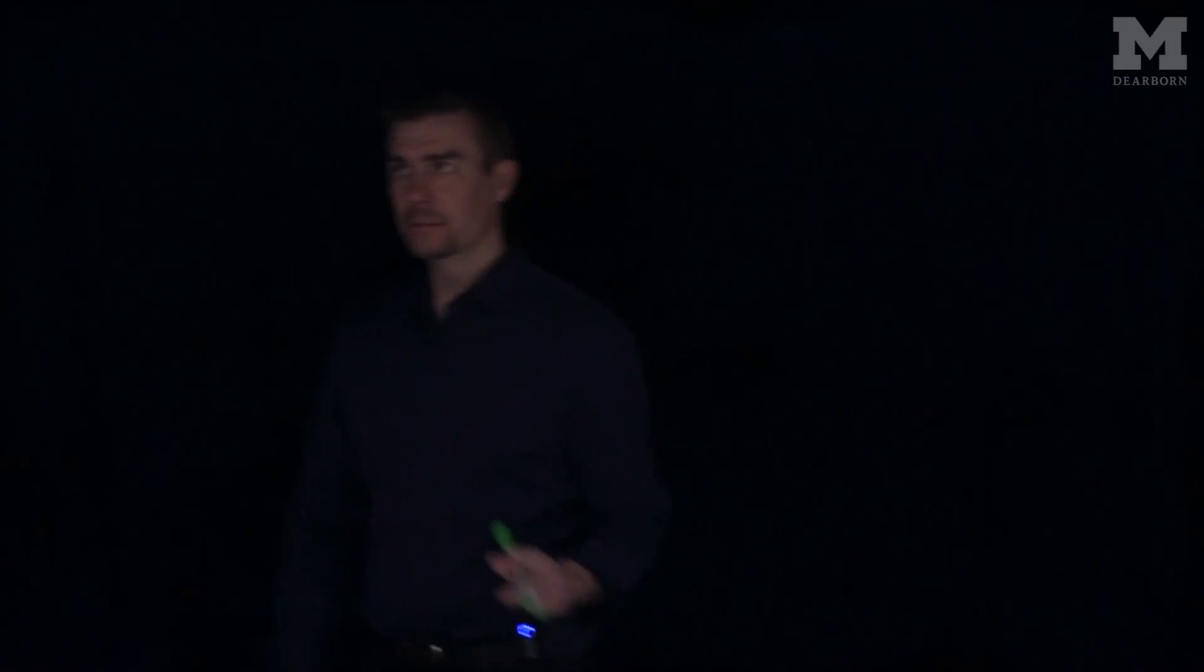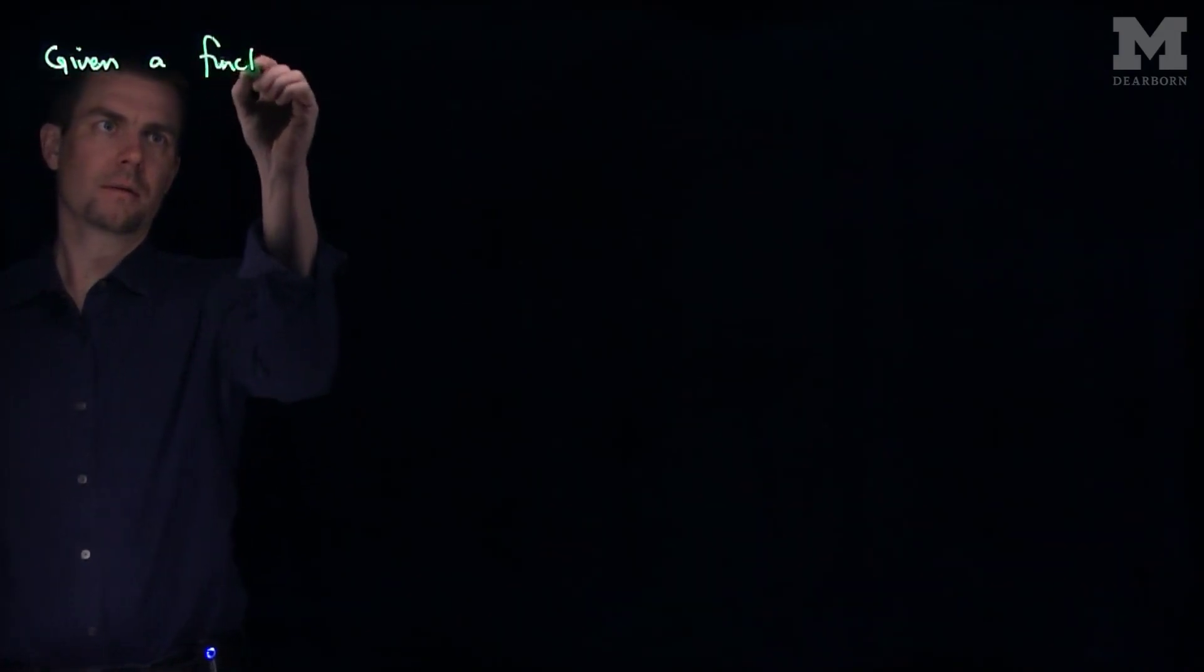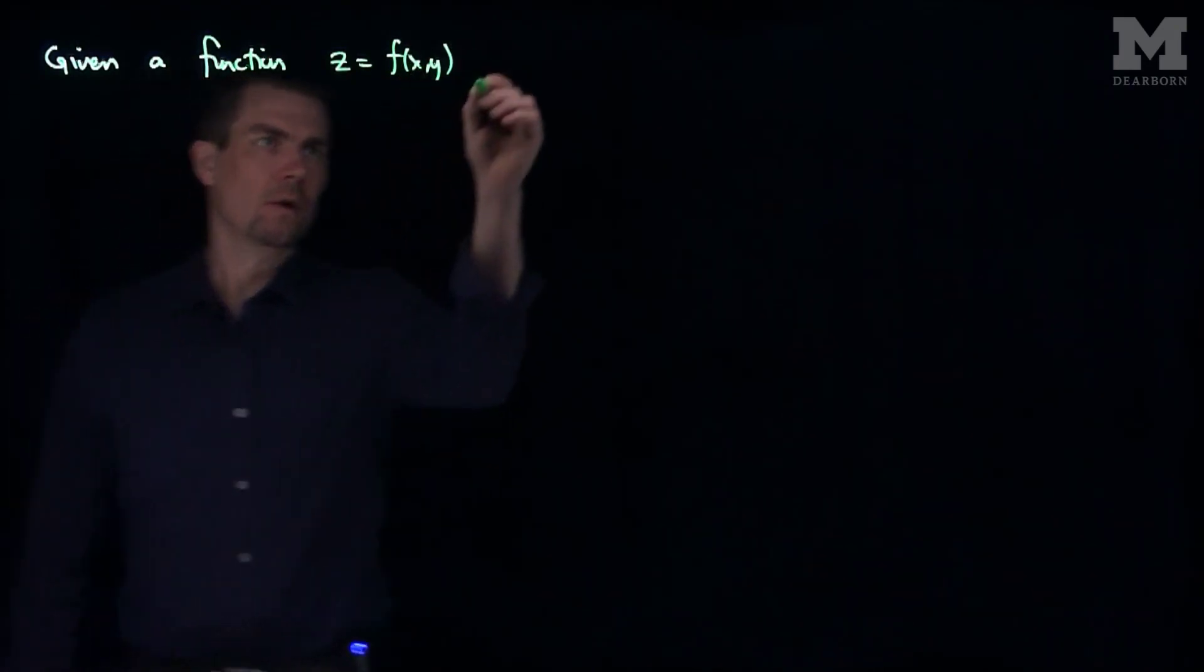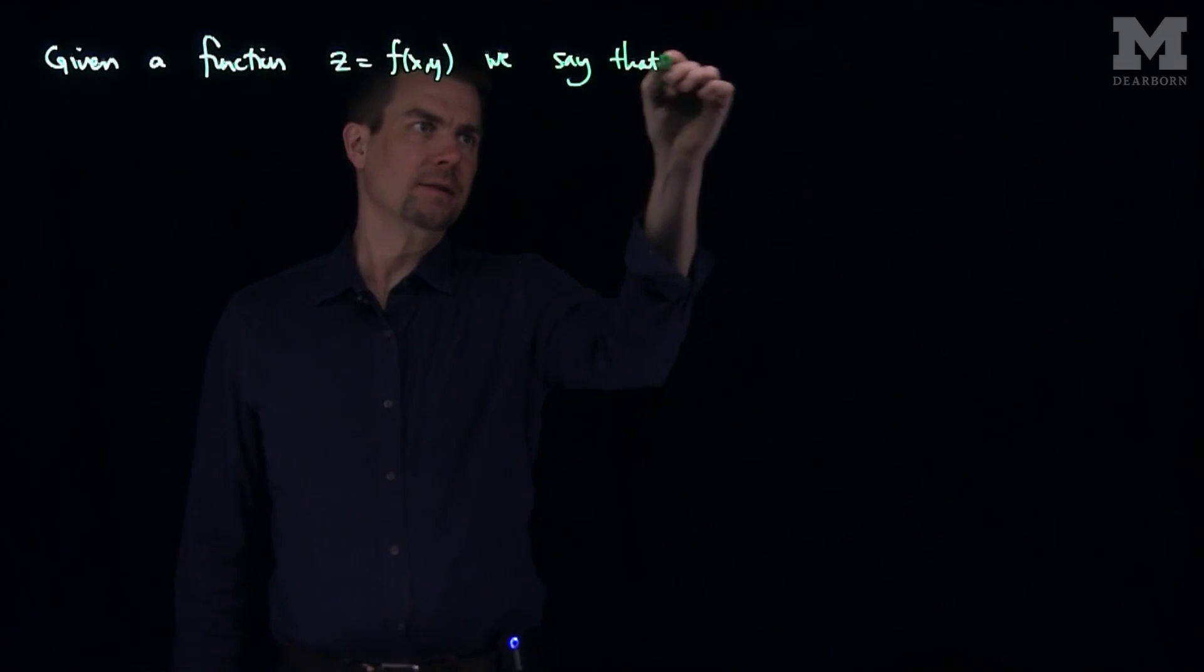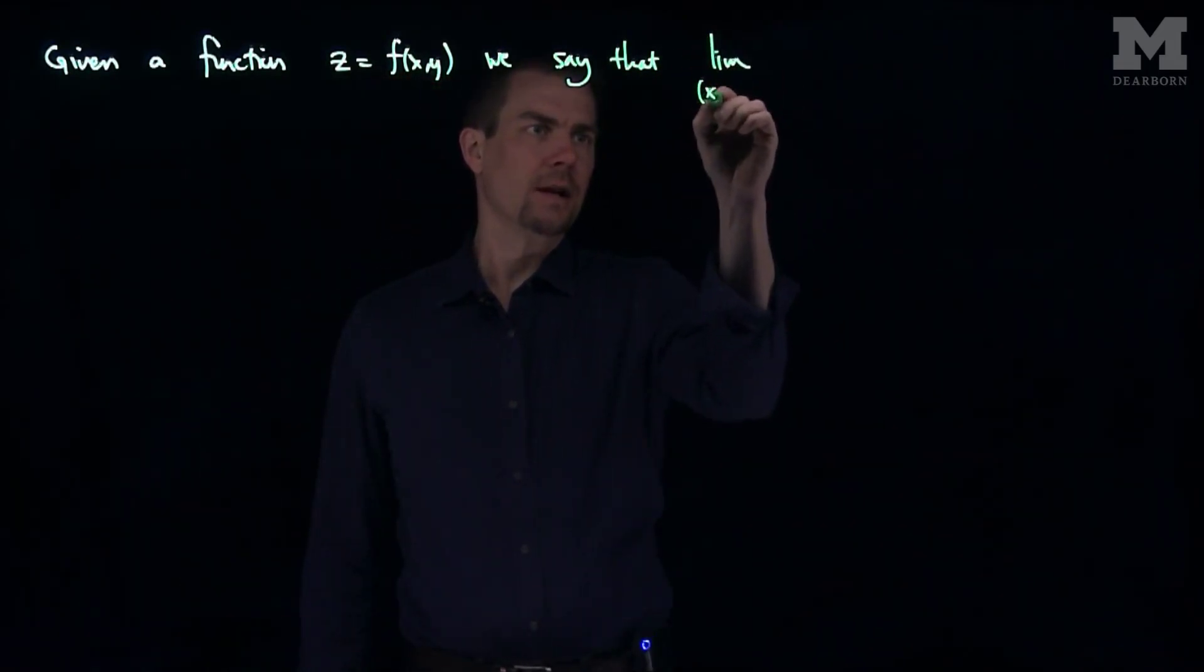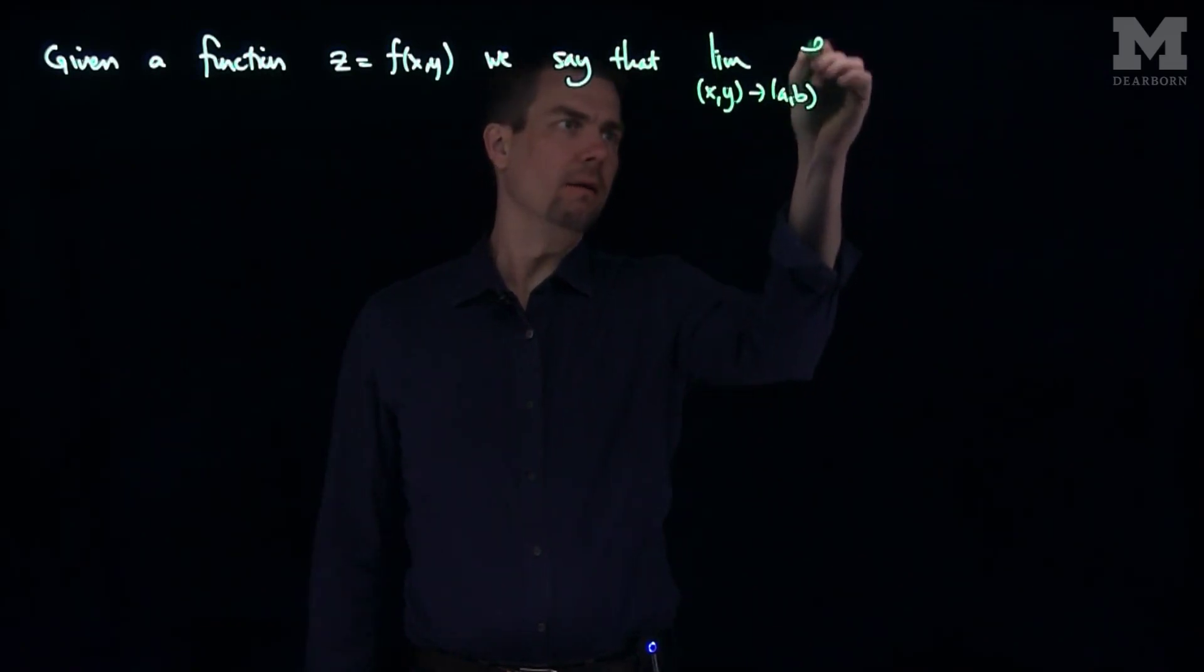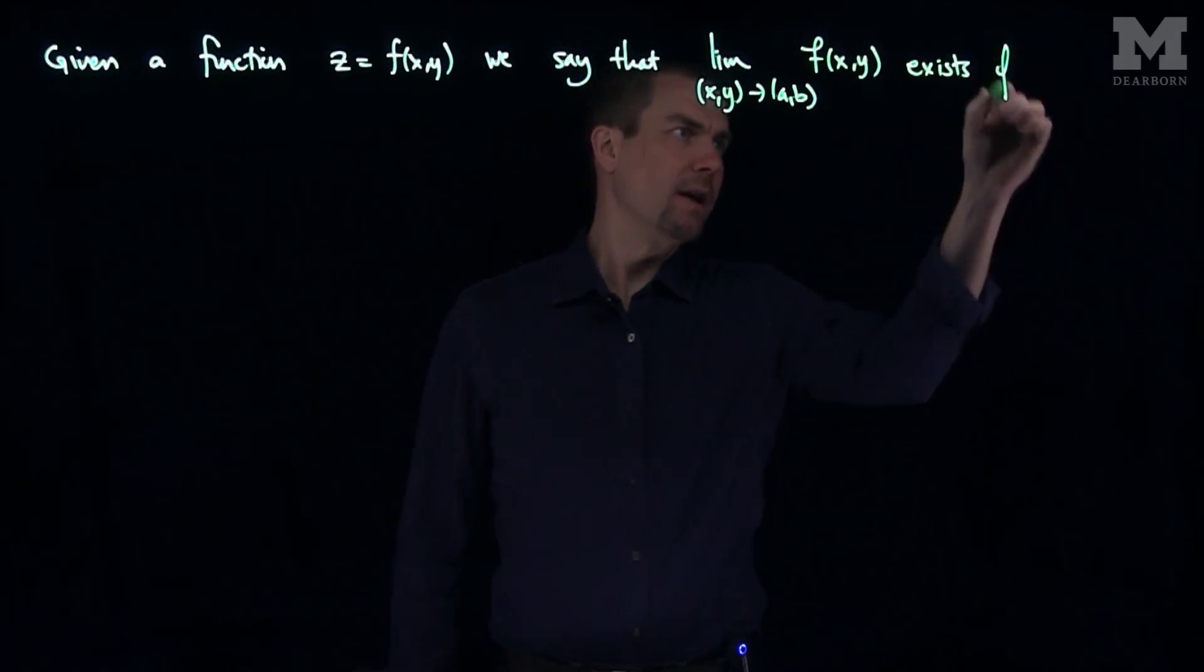Computing Limits of Functions of Several Variables. Hello students. In this video, we'll discuss computing limits of functions of several variables. Given a function z equals f, we say that the limit as x, y approaches a, b of f exists if